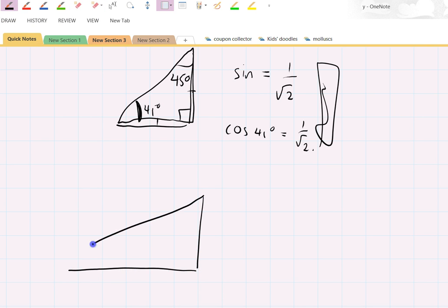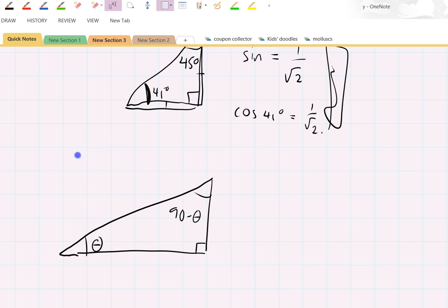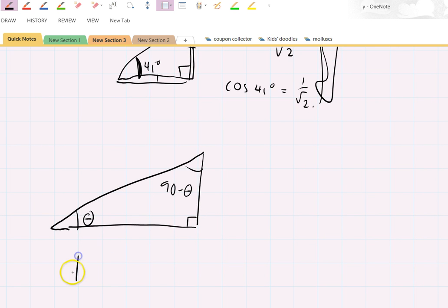Let's draw a triangle. There's theta, that's 90 minus theta, and that's a right angle. We know that tan of theta equals opposite over adjacent. The opposite side is x and the adjacent one is y, so tan theta equals x over y.